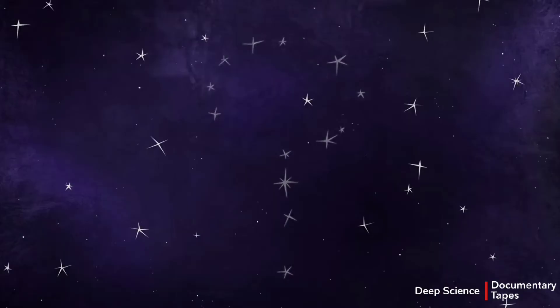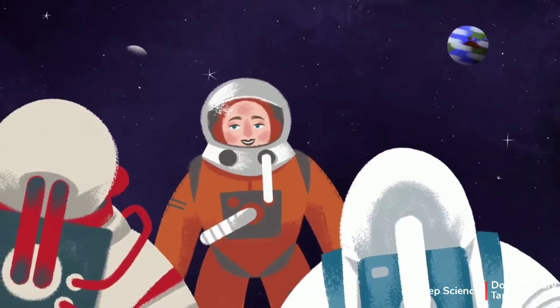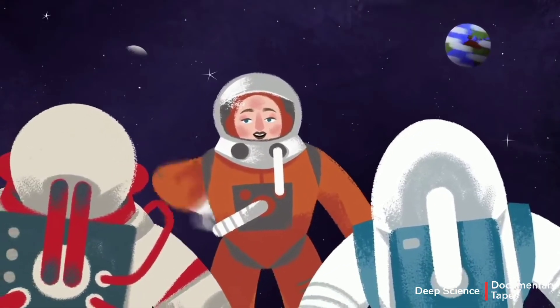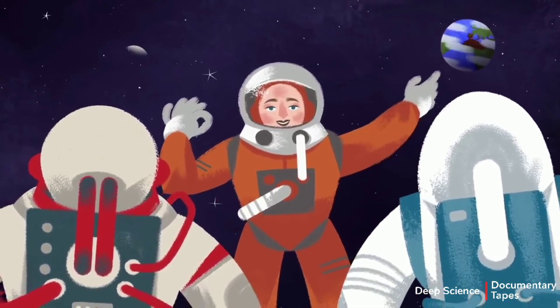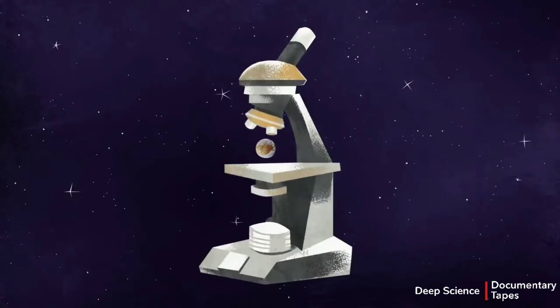So what might indicate that life exists on these or other worlds? If it is out there, astrobiologists speculate that it would be microscopic, comparable to the bacteria we have on Earth. This would make it difficult to directly observe from a great distance.